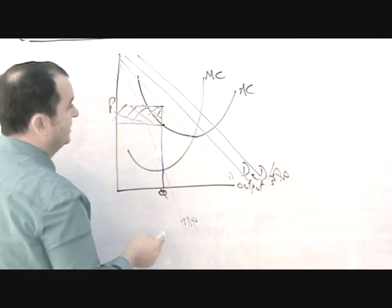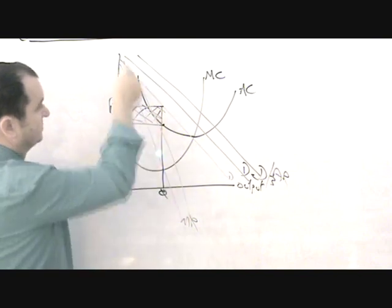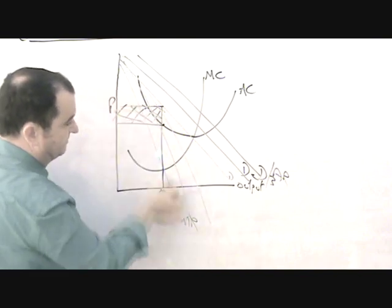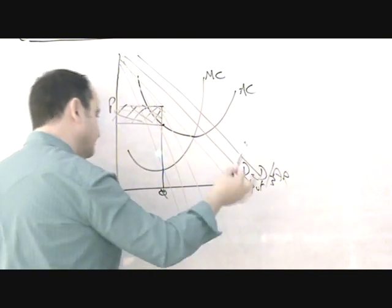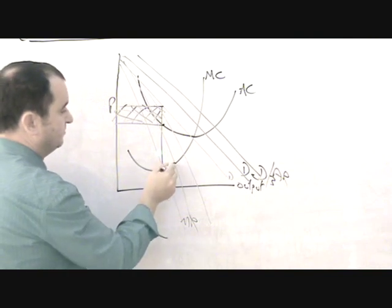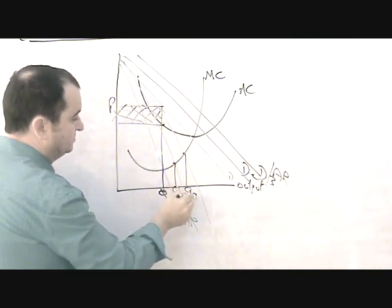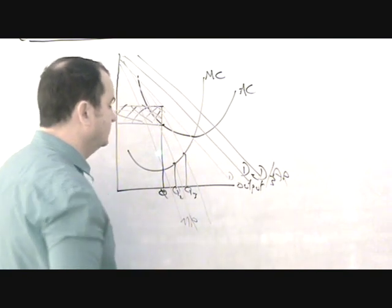If this increases, then so will the marginal revenue curve increase because the marginal revenue curve is twice the steepness of the average revenue curve. And the profit maximising level of output will start to rise and the firm will adjust accordingly.